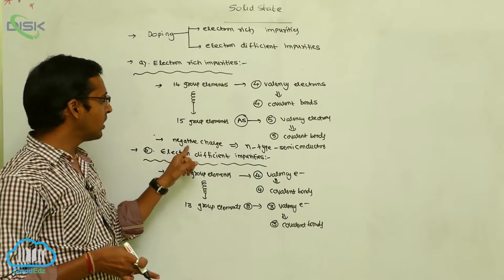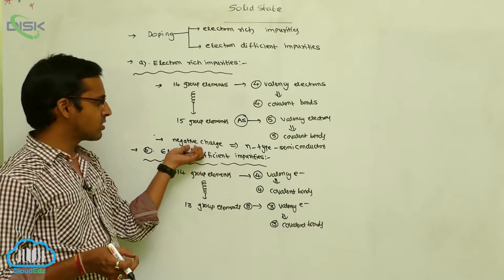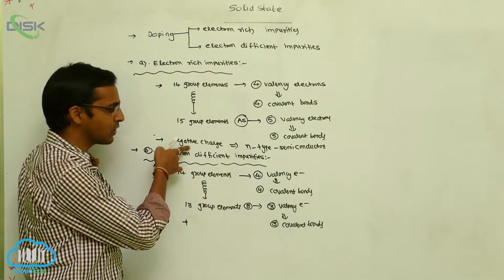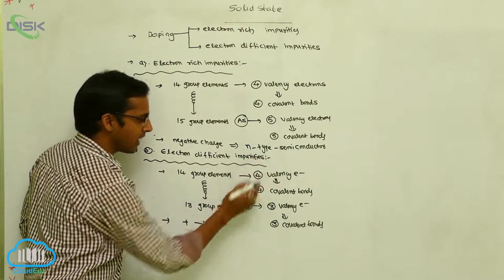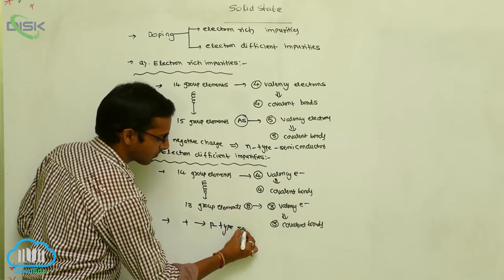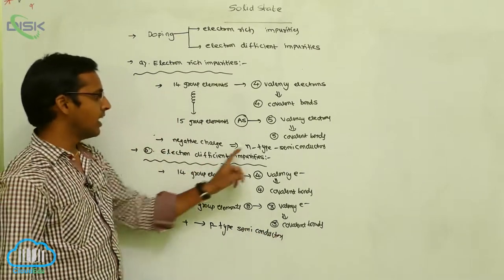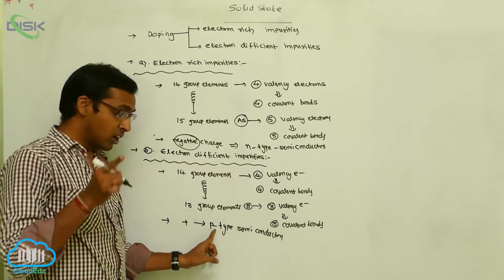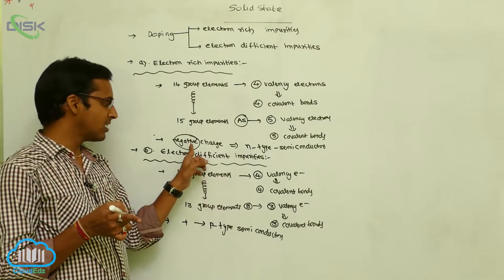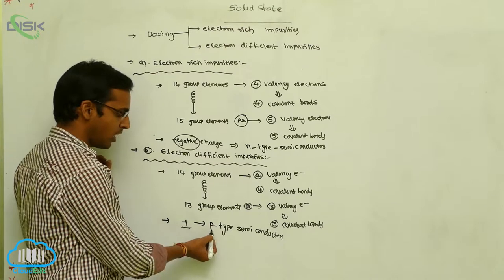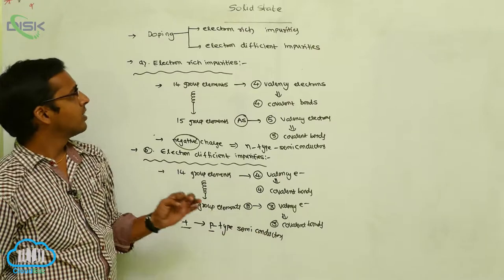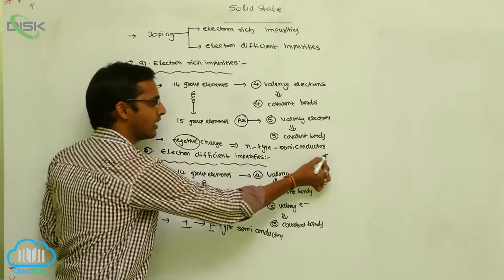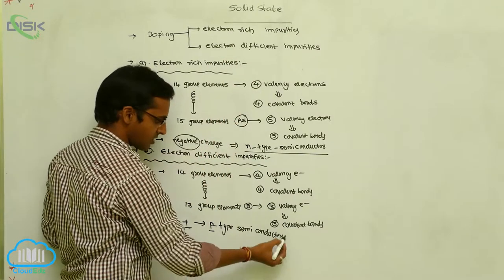That missing electron site is delocalized towards the negative charge, meaning one electron is absent, which effectively carries positive charge. Those types of semiconductors are called p-type semiconductors. In n-type semiconductors, one electron is extra carrying negative charge; in p-type, one electron is missing and the direction is towards positive charge. Doping with electron-rich impurities gives n-type semiconductor; electron-deficient impurities give p-type semiconductor.